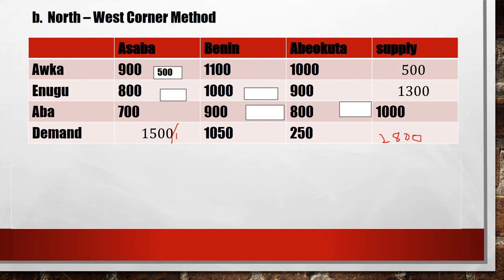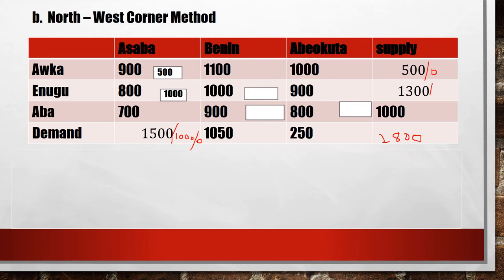After subtracting 500, the demand has 800 remaining and the supply has 1000 remaining. Since the supply for that row is exhausted, I move down to the next row. Between the remaining demand of 1000 and the supply of 1300, the minimum is 1000, so I fix 1000 in that cell. Subtracting: demand becomes zero and the supply has 300 remaining.